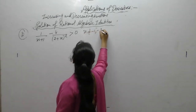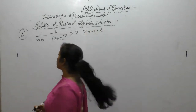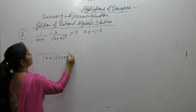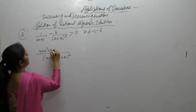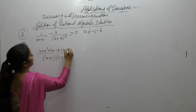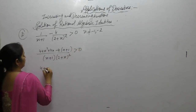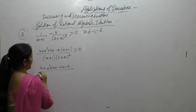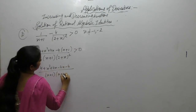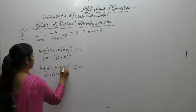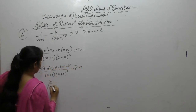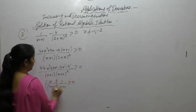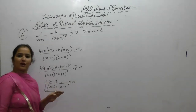For the next problem, x is not equal to minus 1 and not equal to minus 2. Taking the LCM as (x+1)(x+2) squared, we expand: a squared plus b squared plus 2ab minus 4 times (x+1), giving 4 plus x squared plus 4x minus 4x minus 4x plus 1 over (x+2) squared.